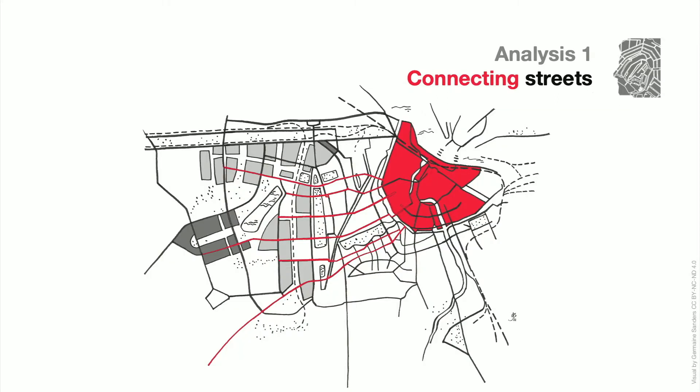For the extension of Amsterdam, they employed a strategy of connecting main streets to relate the old city of Amsterdam with the new extension areas. By continuing the main city streets, the old and the new city districts could be connected well.